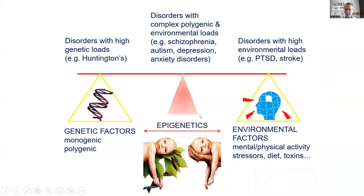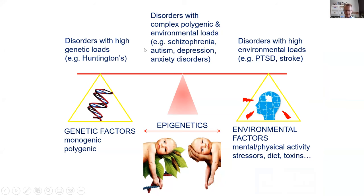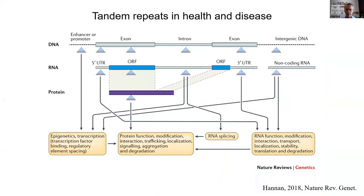What I'm going to talk about now is a part of our work that's most relevant to neurodevelopmental disorders. We are particularly interested in gene-environment interactions and more recently in epigenetics. Pretty much all major psychiatric disorders have their origins in neurodevelopment, particularly with respect to risk and resilience. I'm going to very briefly talk about tandem repeat disorder, which is relevant to pretty much anyone interested in neurodevelopment, including neurodevelopmental disorders.